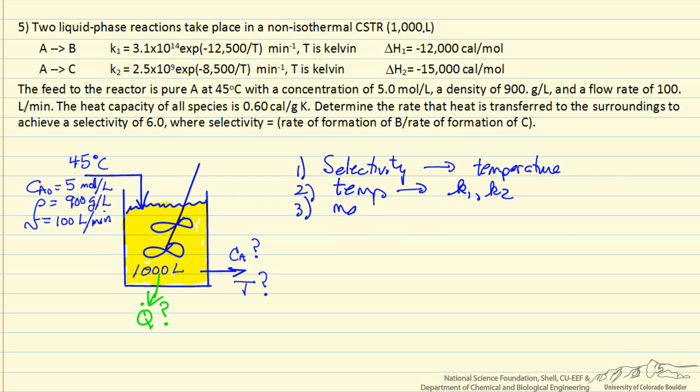Once we know the temperature, we can calculate k1 and k2. Then we're going to use a mass balance on A, and this allows us to determine the exit concentration from the reactor.